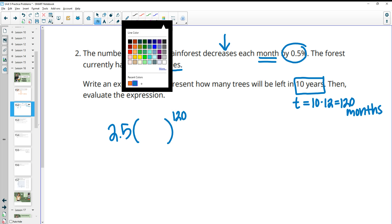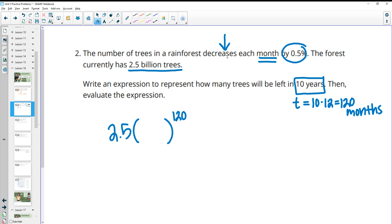Now your growth factor, remember we're looking at it's decreasing. So 100% would be it staying the same, keeping 100% of its trees. But now it's decreasing or going down by 0.5%. So if we do 100 minus 0.5, we get 99.5% is left over.